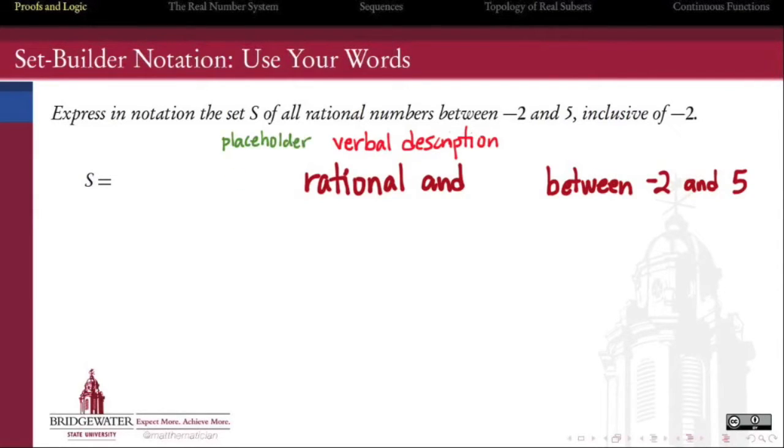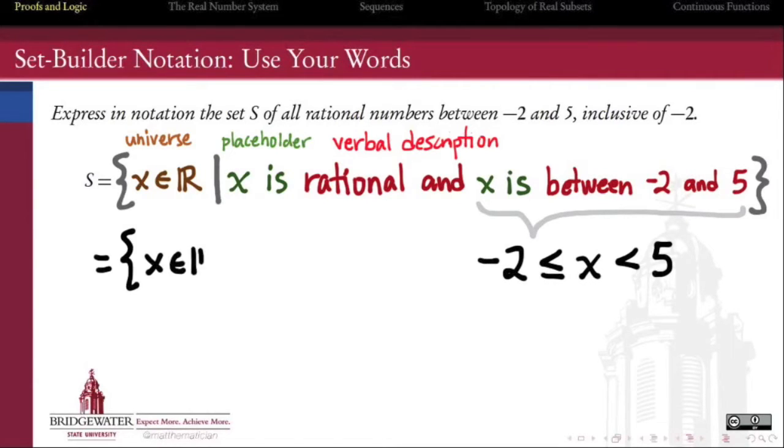Then we'll add a placeholder variable x, we'll quantify it by saying where do our x's live, in the reals, and then we'll just add some braces and a vertical bar. We can refine it with more notation if we choose to do so.